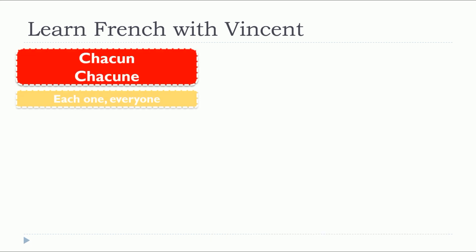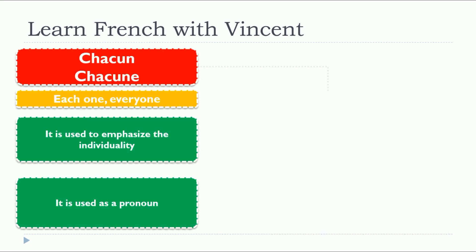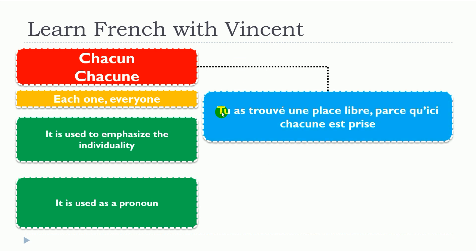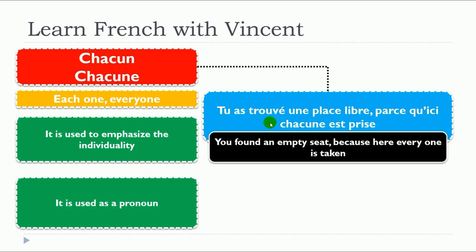Let's have two more examples. Tu as trouvé une place libre parce qu'ici, chacune est prise. Here, chacune is connected to place, and it's feminine.